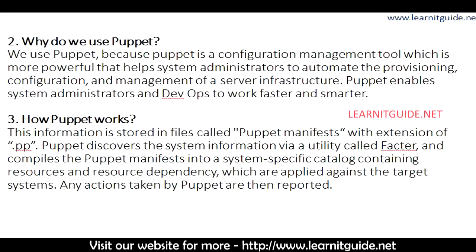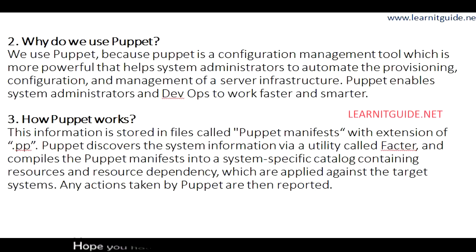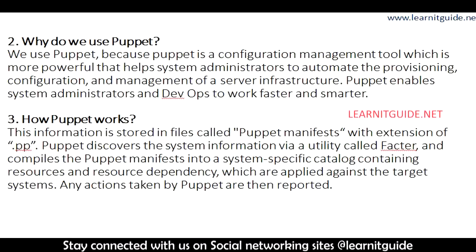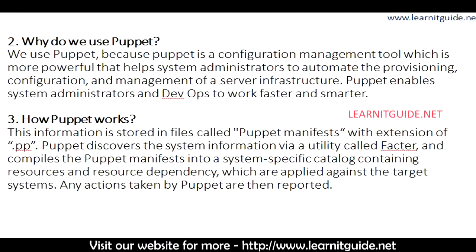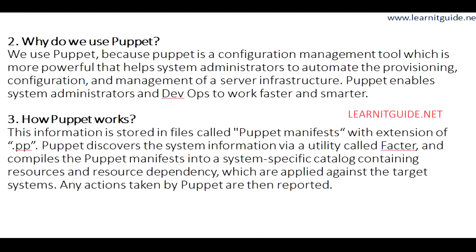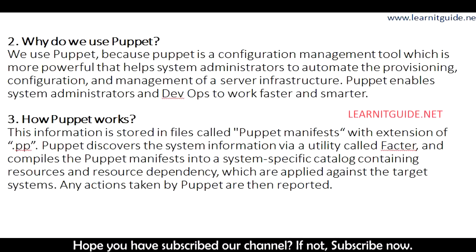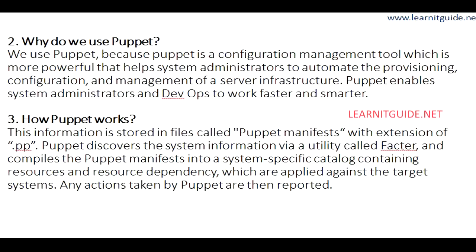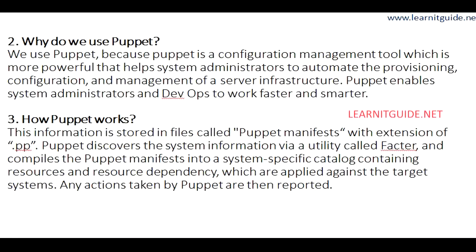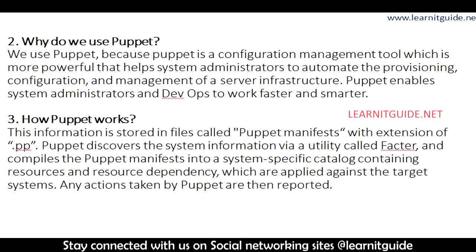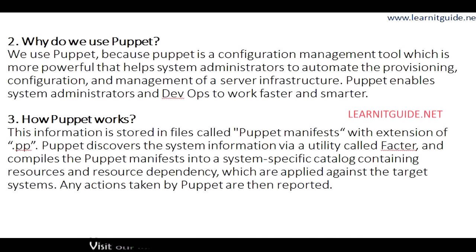All the information will be stored in a Puppet manifest file with the extension .pp. Puppet discovers system information via a utility called Facter. It then compiles the Puppet manifest into a system-specific catalog containing the resources and resource dependencies, which are applied against the target — the client system. Any actions taken by Puppet are then reported.